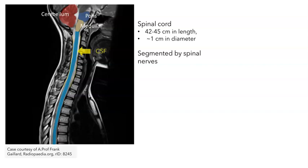We can see that the spinal cord is really a column of tissue. Nevertheless, it's referred to as a segmented structure. The reason it's segmented is because the axons carrying sensory information into the spinal cord and the axons carrying output to the periphery must exit between the vertebrae, so the nerves that leave the spinal cord do this in a segmented fashion.